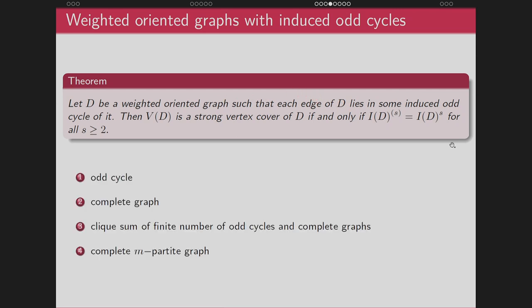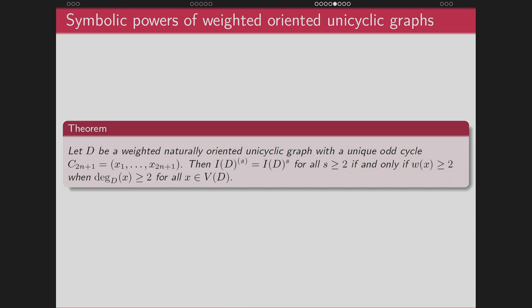We have already proved that if VD is a strong vertex cover, then equality holds. Now we are saying the other direction is also true, but with the condition that each edge of D lies in some induced odd cycle. As an application of this theorem, for odd cycles, complete graphs, clique sums of finitely many odd cycles and complete graphs, and complete multipartite graphs — in all these classes, each edge lies in some induced odd cycle, so we can apply this theorem.